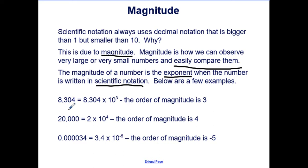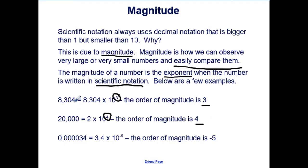Here are a few examples. We have eight thousand three hundred and four, which in scientific notation converts to 8.304 times ten to the third. Since the exponent is three, the order of magnitude is three. We have twenty thousand, which in scientific notation is 2 times ten to the fourth, so the order of magnitude is four. You can see that twenty thousand is larger than eight thousand three hundred and four, so four is larger than three.